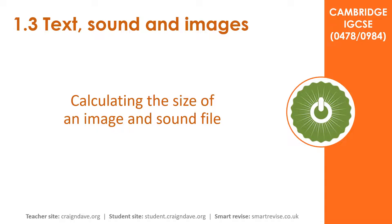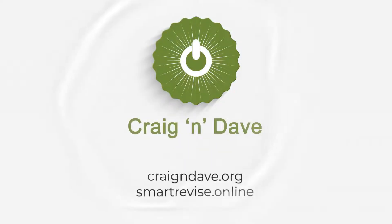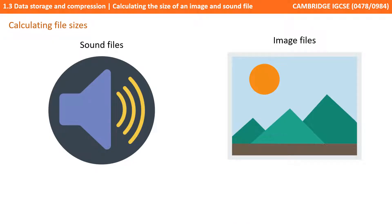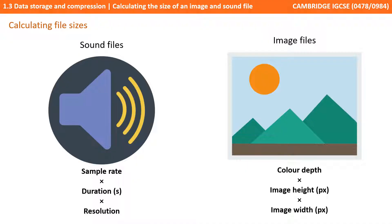In this video we take a look at how to calculate the size of an image and a sound file. For the exam you need to know how to calculate the size of a sound file and also the size of an image file. As a simple summary: a sound file is the sample rate times the duration in seconds times the resolution. For an image, it's the colour depth in bits times the image height in pixels times the image width in pixels.